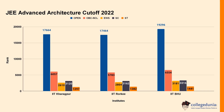For IIT BHU Architecture in 2022, the cut-off rank was 19296 for Open category, 6554 for OBC-NCL, 3181 for EWS, 3316 for SC, and 1441 for ST.